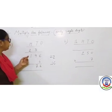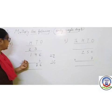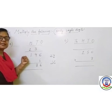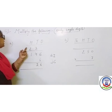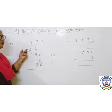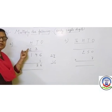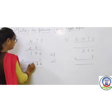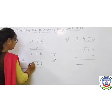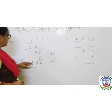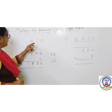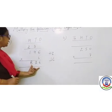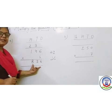Next, 100's place. 6 multiplied by 1 — 6 ones are 6. Plus carry forward 2 equals 8. So our product is 876.